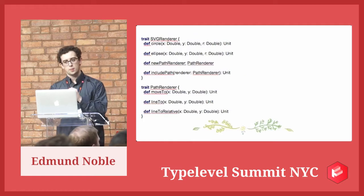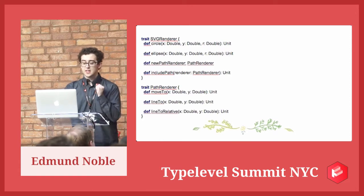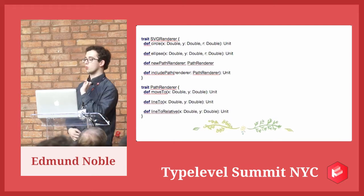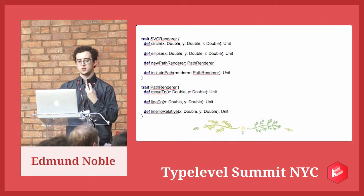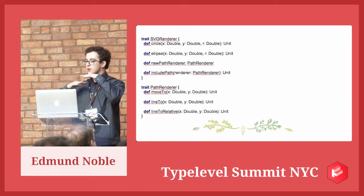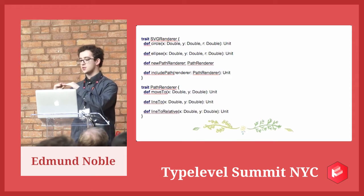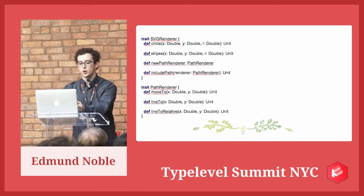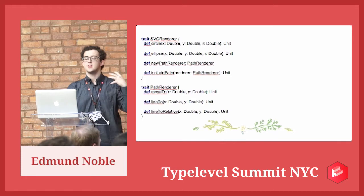For my second example, I have an SVG renderer — essentially a compiler with mutable state, because everything returns unit. There's some kind of internal language to SVGs: paths. SVGs have shapes and one shape is a path, and paths have their own interpreter or compiler — the path renderer. The SVG renderer is responsible for, given a path renderer, including it into the file it is compiling, or creating a new path compiler if needed.